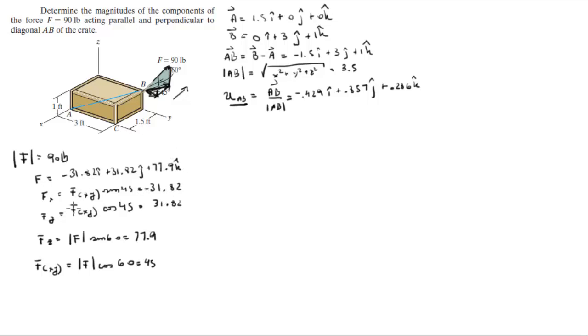This is the force vector. If you want to find the projection along AB of F, all you got to do is the dot product of F and the unit vector AB. That will give you the projection of F along AB.